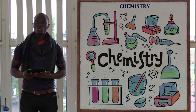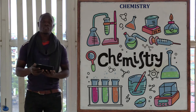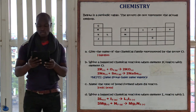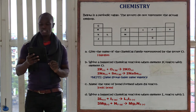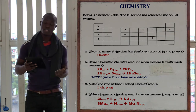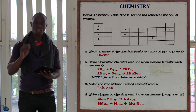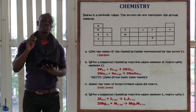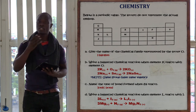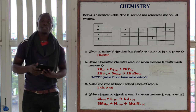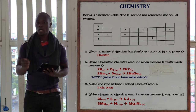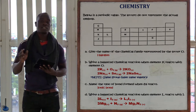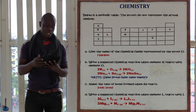Hello and welcome. I want us to look at another chemistry revision paper for form 2. Let's begin with the first question, which is about the periodic table. The question states that below is a periodic table where the letters do not represent the actual symbols. If the question is not specific, you can use the letters or replace them with the actual chemical symbol. But if the question specifies to only use the letters, then you should only use the letters.